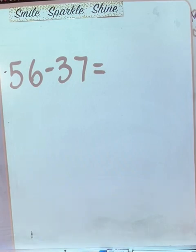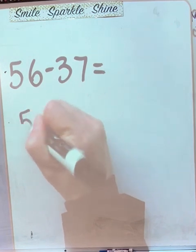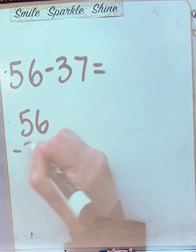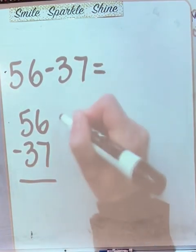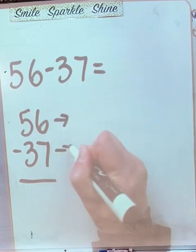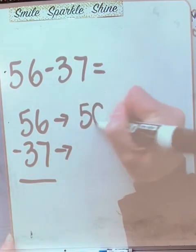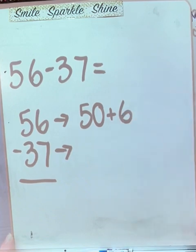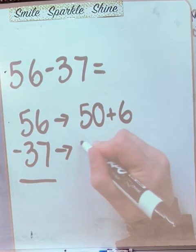What's the first thing we do in expanded form? Rewrite it. Rewrite the equation. 56 minus 37. Let's put our little arrows here. What's the expanded form of 56? 50 plus 6. What's the expanded form of 37? 30 plus 7. Good.